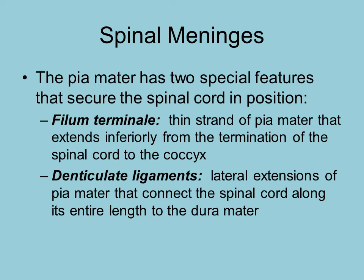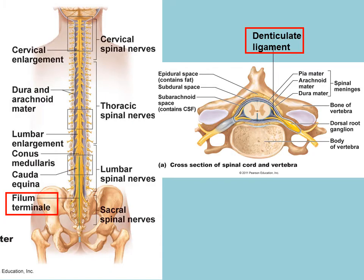The pia mater has a couple of notable features. The filum terminale extends down to the most inferior portion at the end of the spinal cord. Throughout the spinal cord, you also have denticulate ligaments. Both of these features help attach the pia mater to the spinal cord — since it is a membrane, it cannot slip and slide around, so these structures physically anchor it in place.